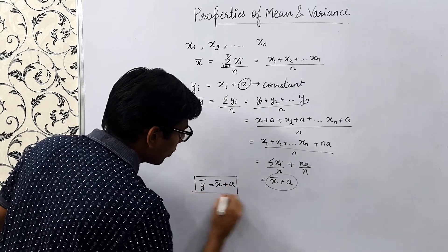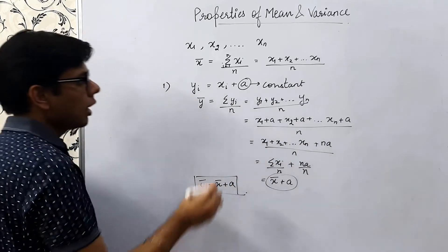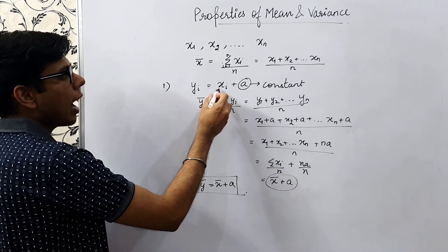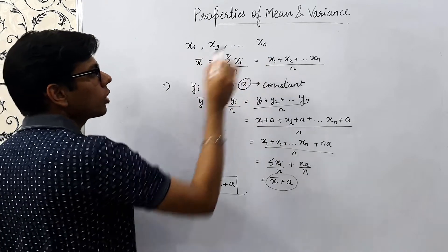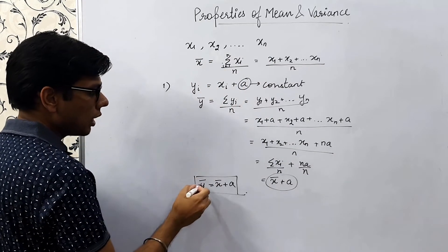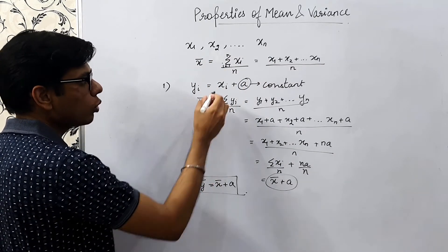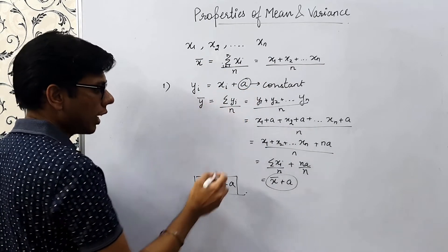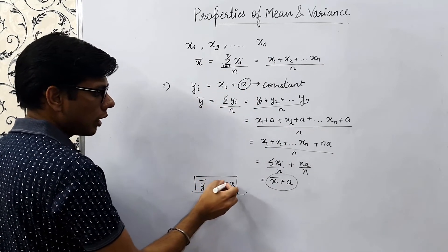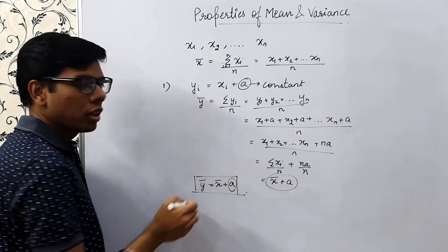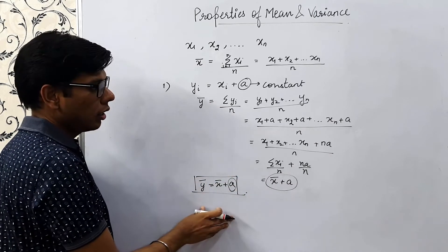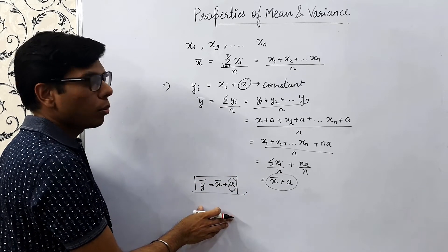So what does Property 1 say? If we add any constant a to all observations, then the mean of the new series is increased by a. This is the first property of mean.